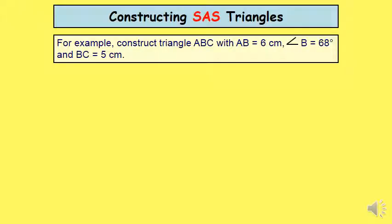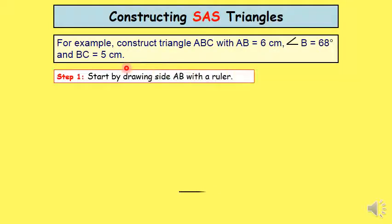Let's take an accurate example. For example, construct triangle ABC with side AB equal to 6 cm, angle B 68 degrees, and BC equal to 5 cm. We start step number 1 by the side AB with the ruler, which measures 6 cm.